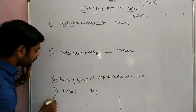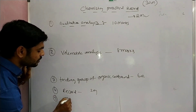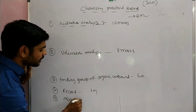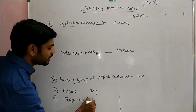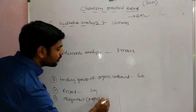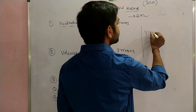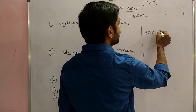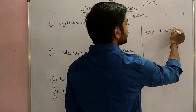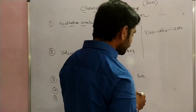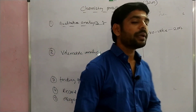Next, the fifth component is the assignment, which carries 2 marks. And the last one is viva voce, which carries 5 marks. Altogether we have the chemistry laboratory total of 30 marks.